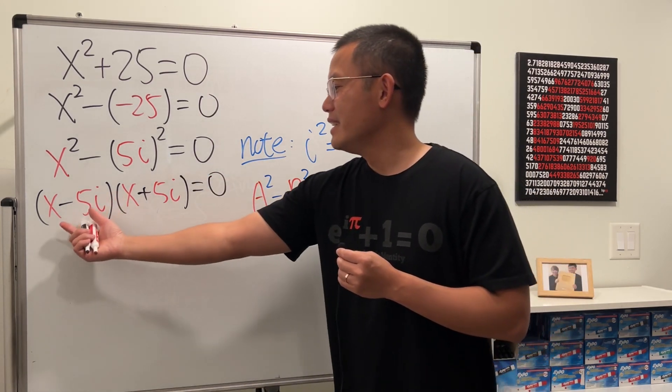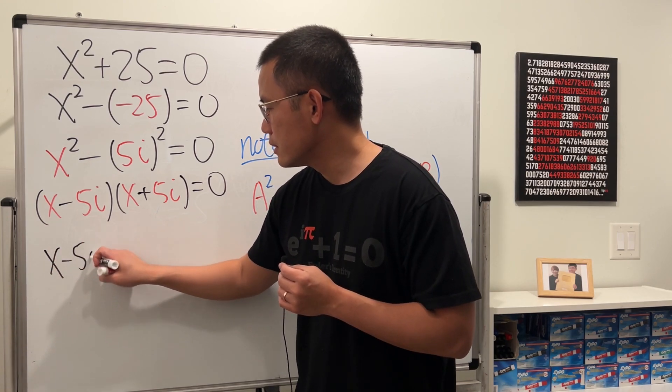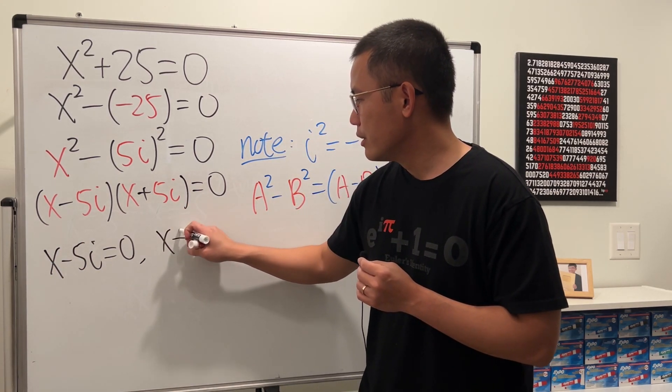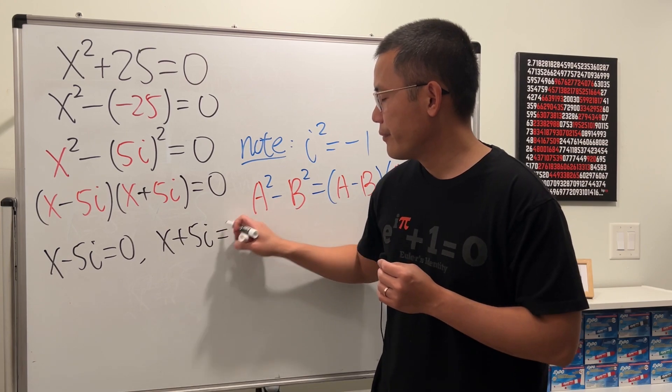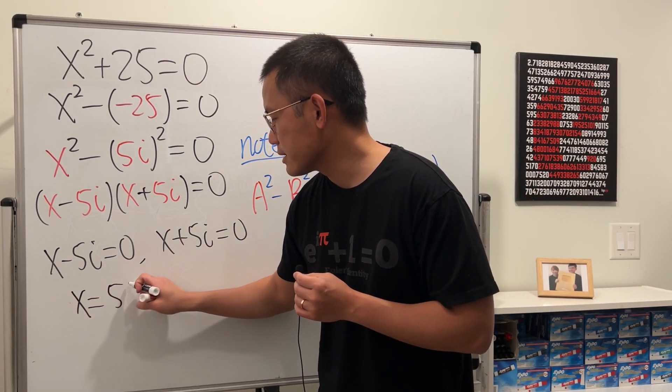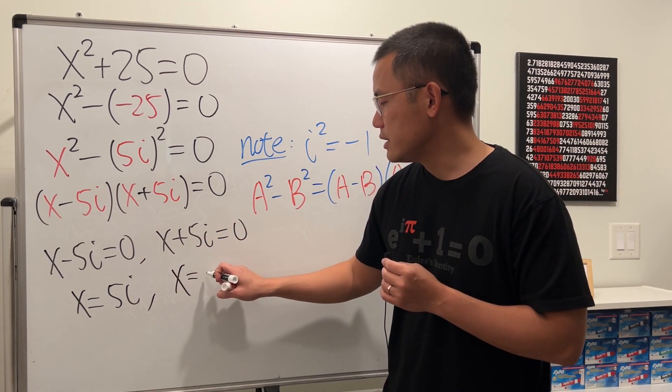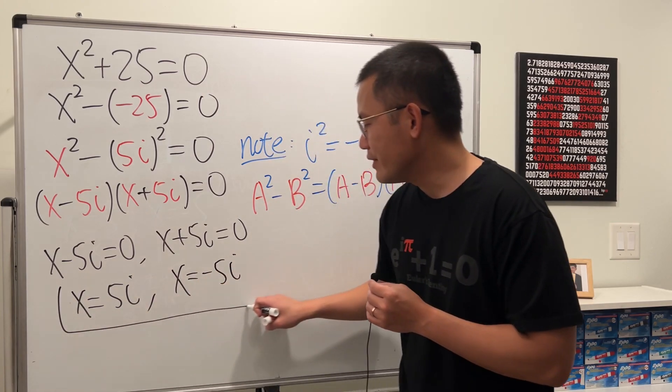Now, this times this is equal to 0. So we can put the first factor to be 0, and the next factor to be 0. From here, just add the 5i to both sides. So x = +5i. From here, subtract 5i to both sides. So x = -5i. And there we have it.